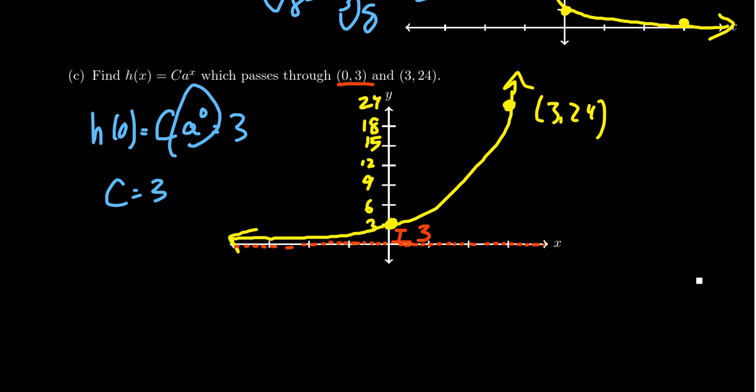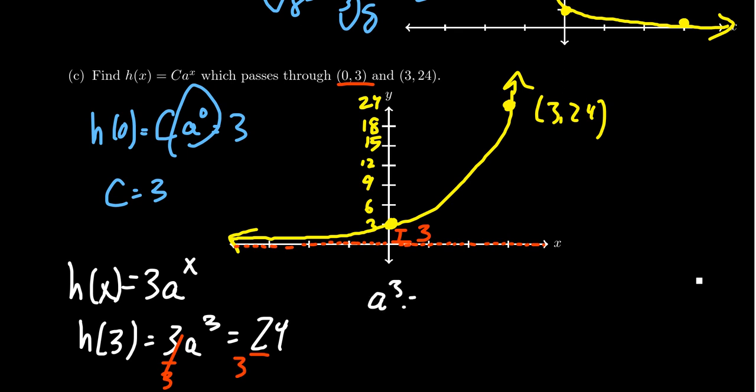So from there, we now learn that our function has the form h of x is equal to 3 times a to the x. Well, if we use the other point, that can help us determine what a is supposed to be. So we see that h of 3 is equal to 3 times a cubed. That should equal 24, in which case if we divide both sides by 3, that would then give us a cubed is equal to 8. And then taking the cube root of both sides, we end up with a equals 2. And so in the end, our function h of x looks like 3 times 2 to the x.